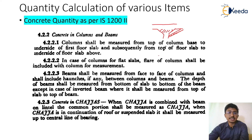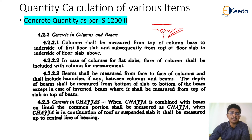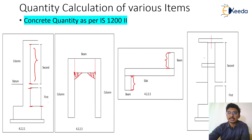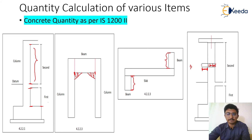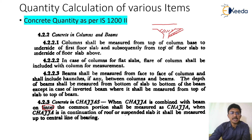Concreting in chajjas is a critical topic frequently asked in interviews, because while chajjas don't consume much quantity, they test your subject knowledge. When a chajja is combined with a beam or lintel — that is, when it is part of a lintel beam — the common portion shall be measured as chajja. So only the common portion between the lintel beam and the chajja is considered as the length of the chajja in concreting calculations.